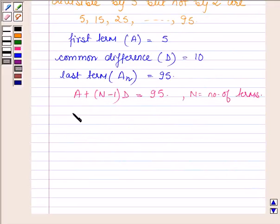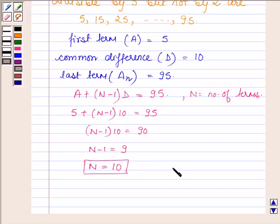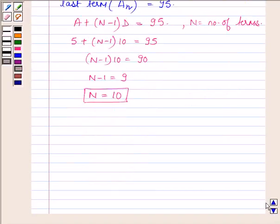So, A is 5, and 5 + (N - 1) * 10 = 95, so (N - 1) * 10 = 90, which implies N - 1 = 9, or N = 10. So the number of terms from 1 to 100 which are divisible by 5 but not by 2 is 10.